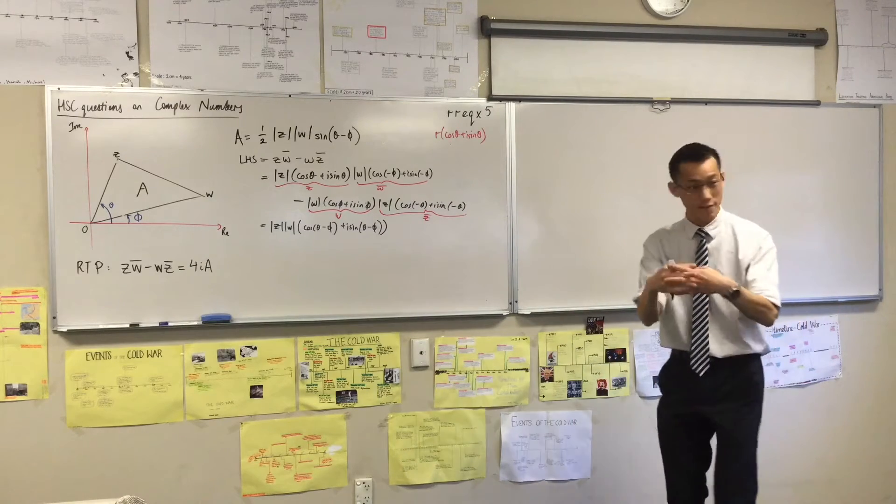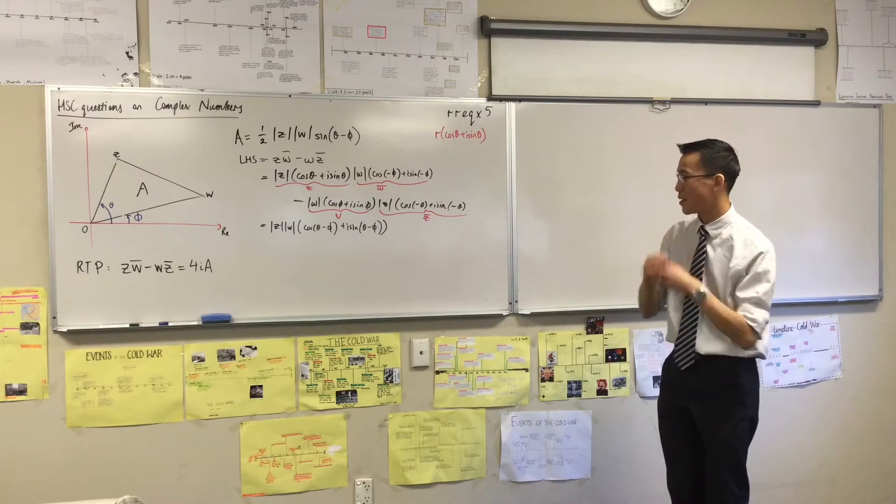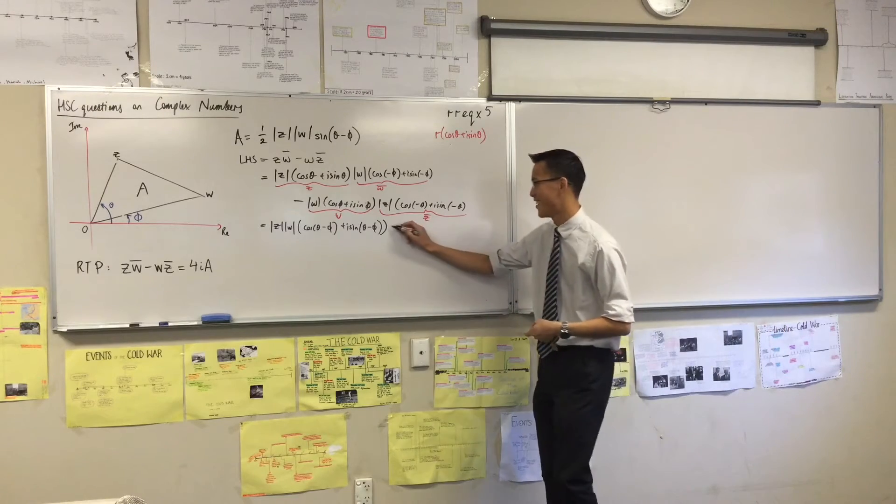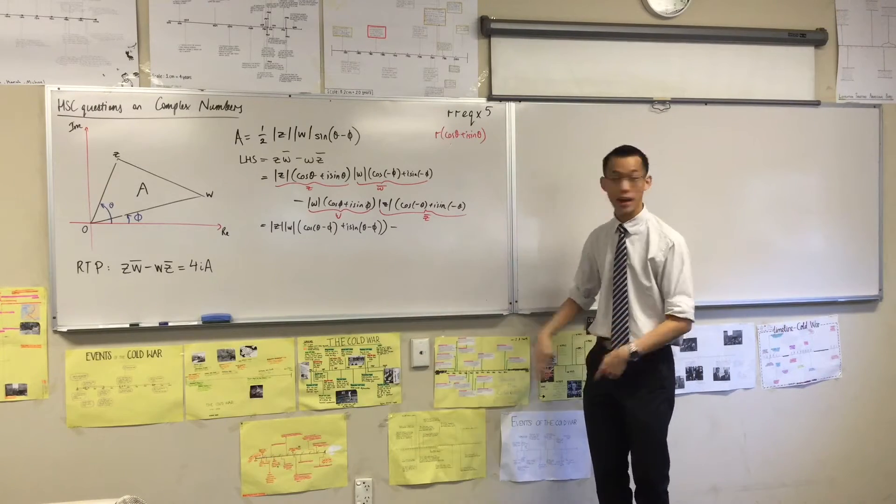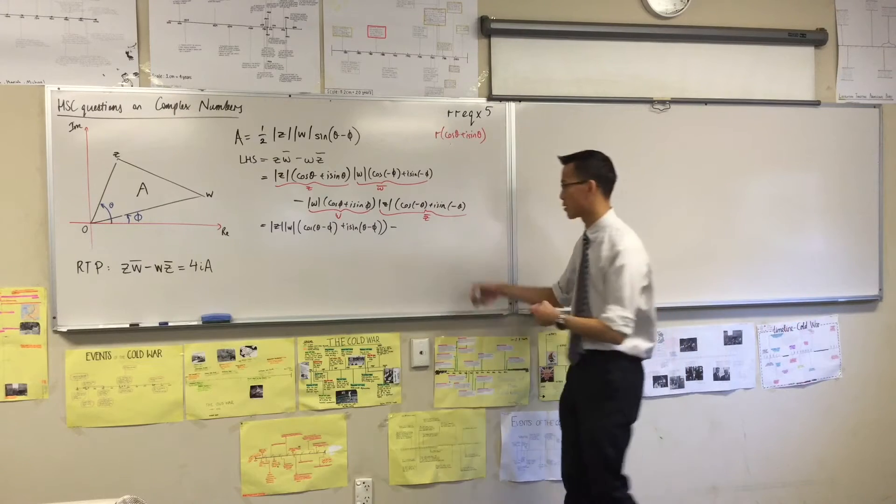So I've multiplied the first pair. They've come together, which thankfully for me has made enough space on this line that I can do the next one over here. Again, I'm going to multiply the mods, add the arguments.